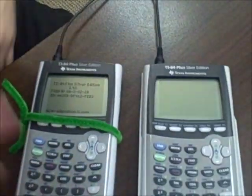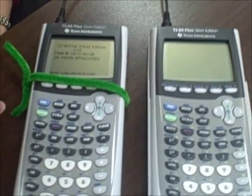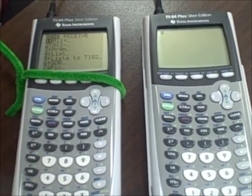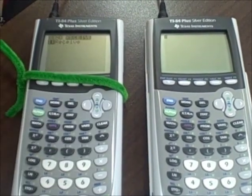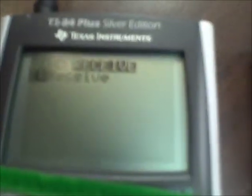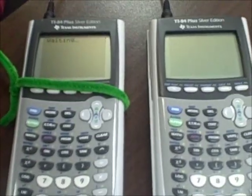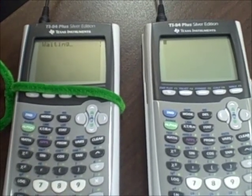Then on the calculator that needs to be upgraded, I press second link, which is second and your variable key, and we get this screen and I right arrow to the word receive and press enter. And it says waiting. It must be waiting before you send the operating system.